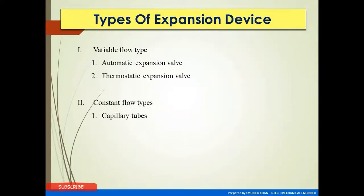Types of expansion devices: variable flow type and constant flow type. In a variable flow type of expansion device, we have the automatic expansion valve and the thermostatic expansion valve. In a constant flow type, it is a capillary tube. Now let us see these in detail.